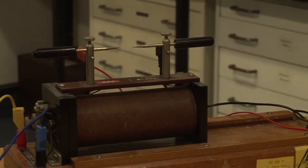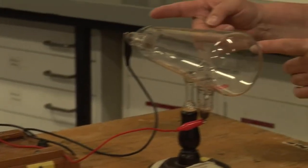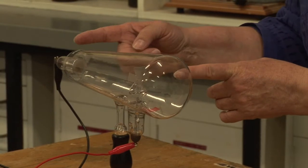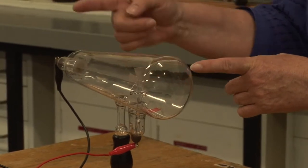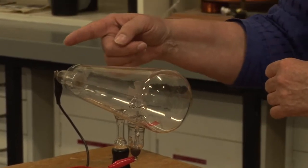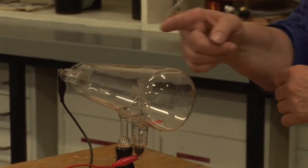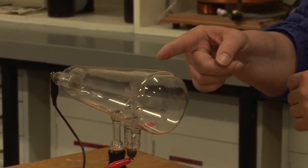That's supplying a high voltage between two terminals on this evacuated glass chamber. At this end, we have the electrons coming in, being attracted to the positive Maltese cross in the middle.